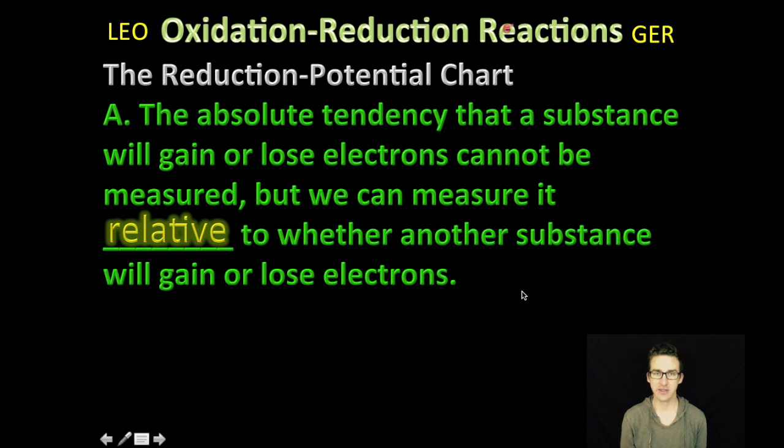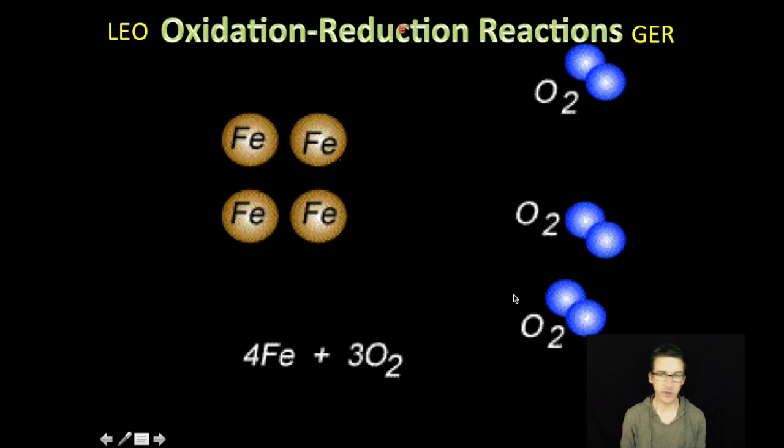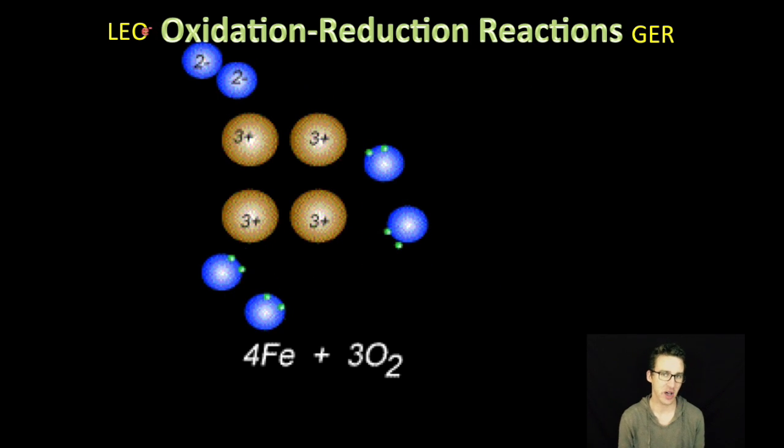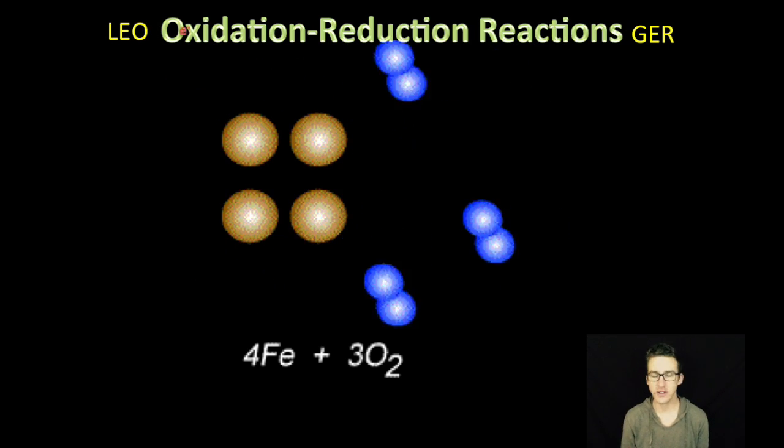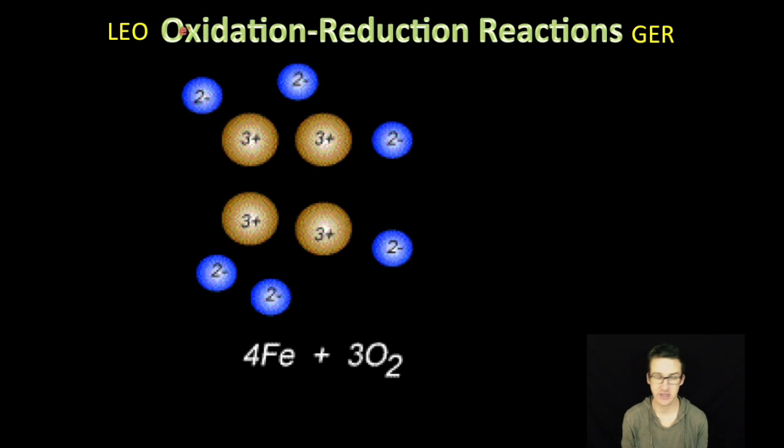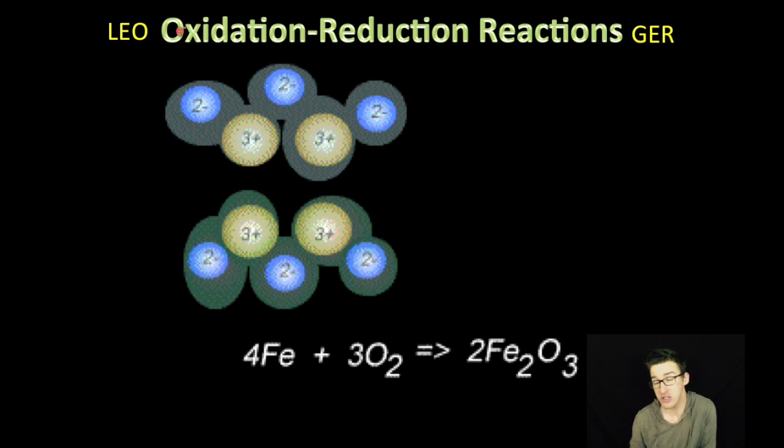First, it turns out that the absolute tendency for a substance to gain or lose electrons cannot be measured, but we can measure it relative to whether another substance will gain or lose electrons. As we come back to this thrilling reaction, think about why is oxygen gaining electrons and why is iron losing electrons? Or, is iron going to be more or less likely to lose electrons than other things? Is oxygen going to be more or less likely to gain electrons than other things?